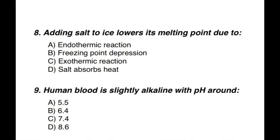Question 8: The correct option is B — freezing point depression. Question 9: Human blood is slightly alkaline with a pH around — the correct option is C — 7.4.